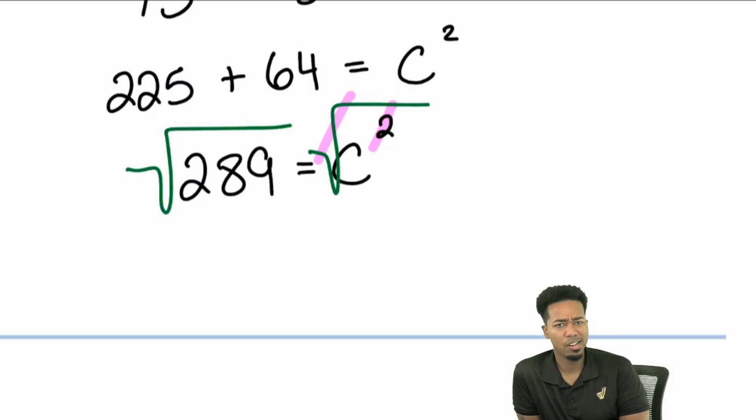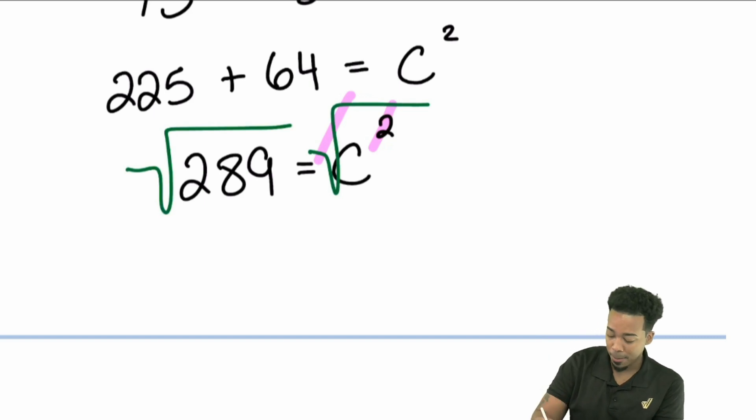What multiplied by itself is going to give us 289? Good question. Well, you may not have to actually do this like 16 times 16, 17 times 17, 18 times 18, 19 times 19. We don't really need to do that. Really what we could do is understand that square root means what number times itself gives me 289.